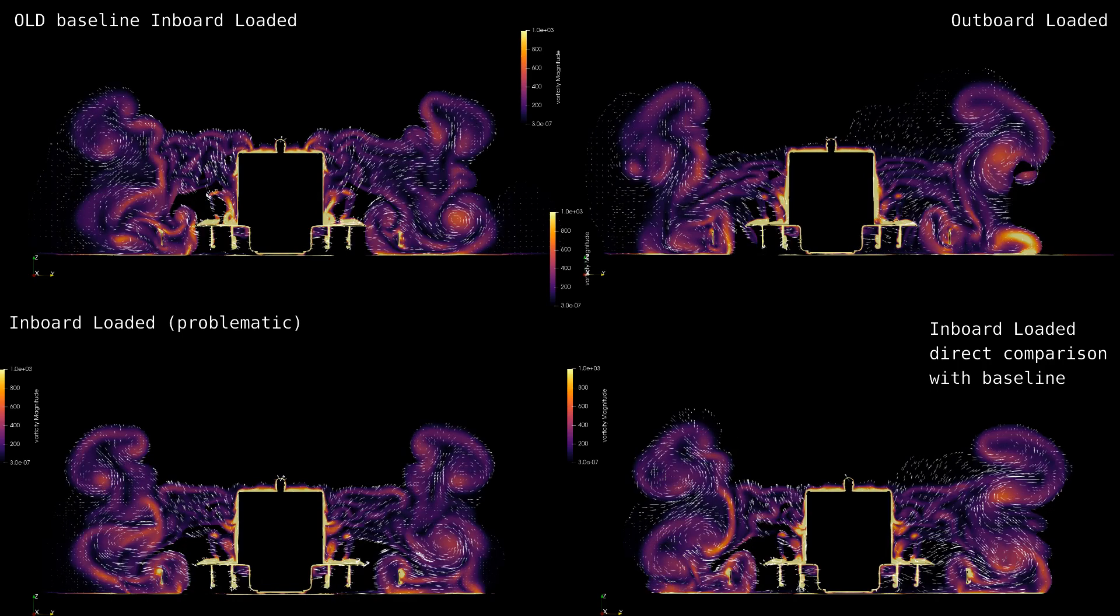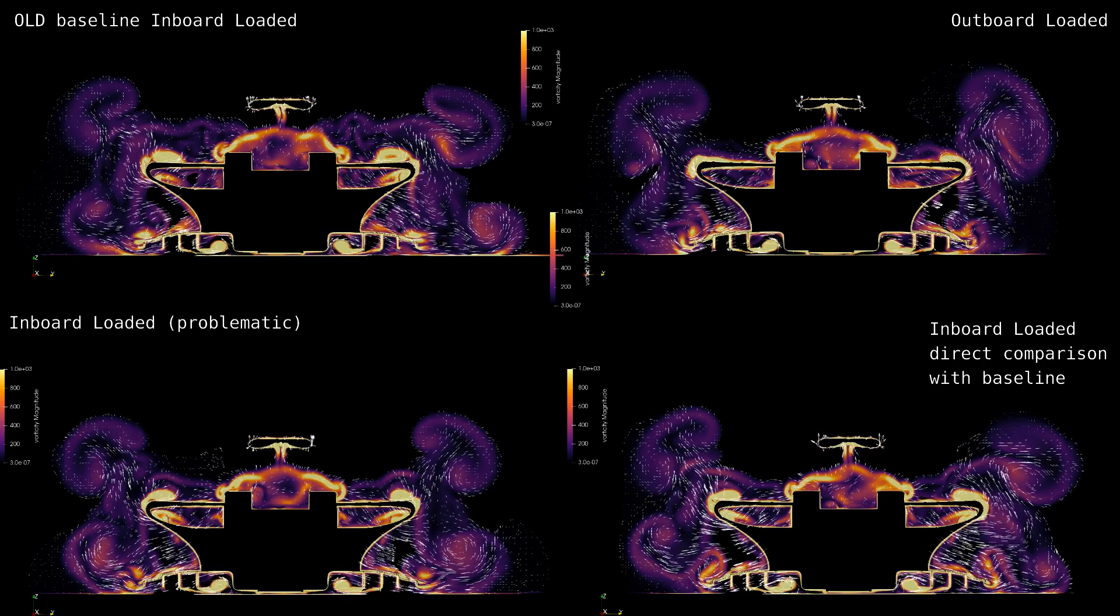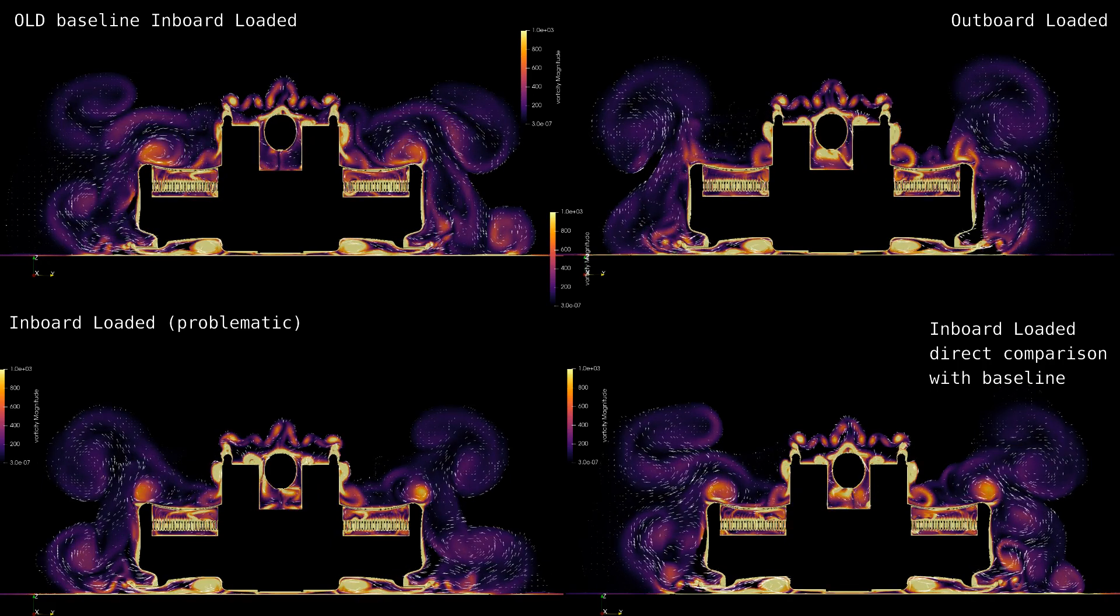After the start of the floor fences, the outwash caused by the chassis, floor and sideport interactions is more prominent with the change. This continues right up and past where the floor fences end.